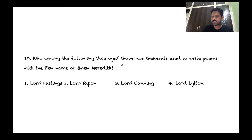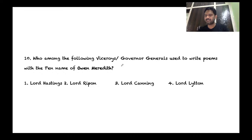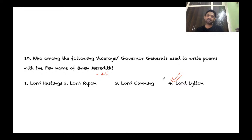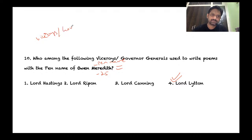Question 10: Which viceroy/governor general used to write poems under the pen name Owen Meredith? The answer is Lord Lytton. He wrote a set of poems under this name at the age of 25 and became very famous — for all the wrong reasons in India. As already mentioned, it is very important to thoroughly study about viceroys and governor generals of India for the examination.